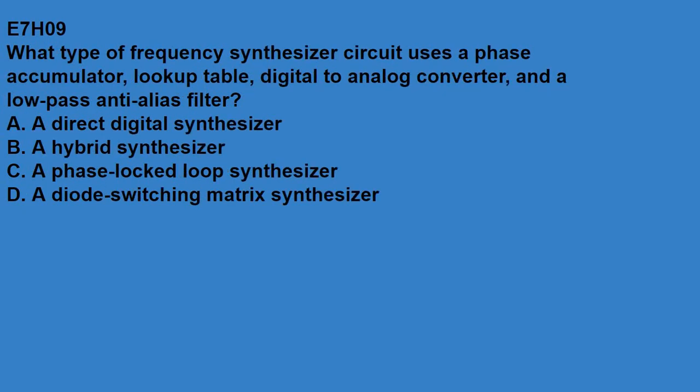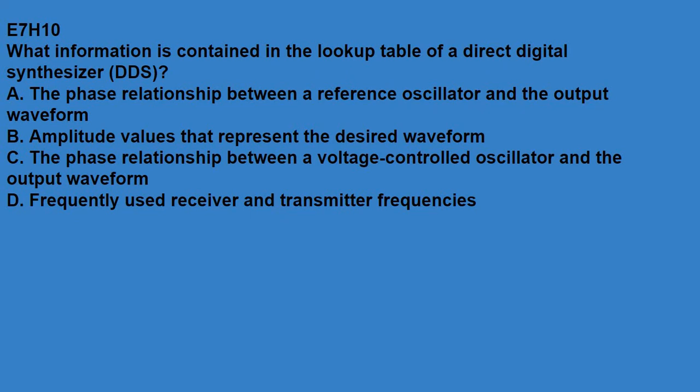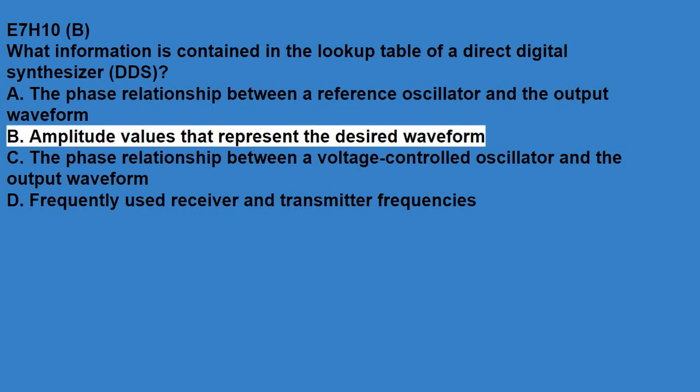E7H09, what type of frequency synthesizer circuit uses a phase accumulator, lookup table, digital-to-analog converter, and a low-pass anti-alias filter? That is a direct digital synthesizer. E7H10, what information is contained in the lookup table of a direct digital synthesizer, known as DDS? Amplitude values that represent the desired waveform.